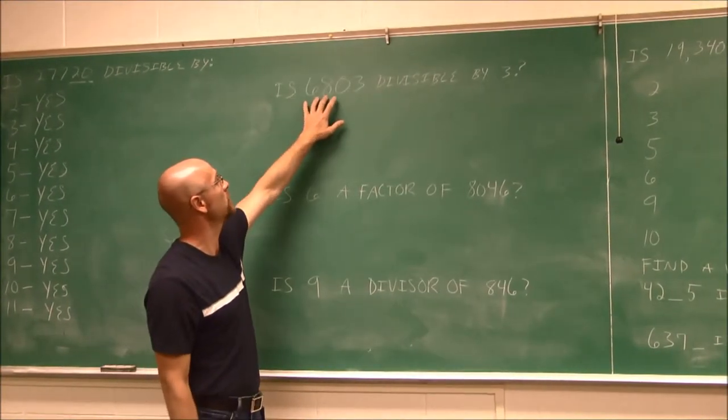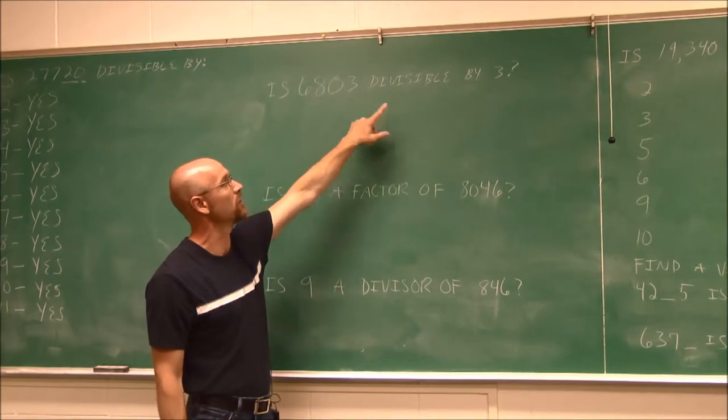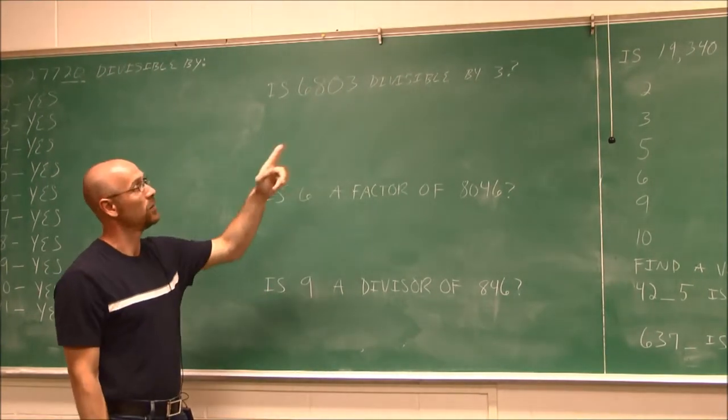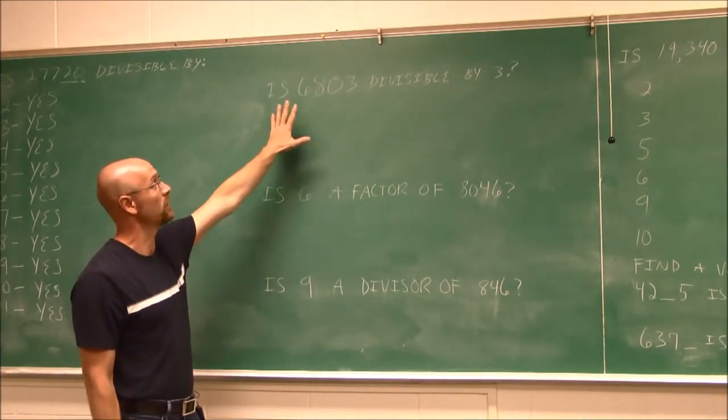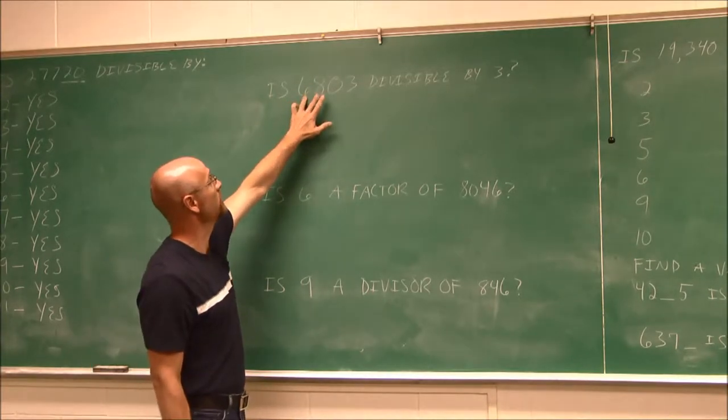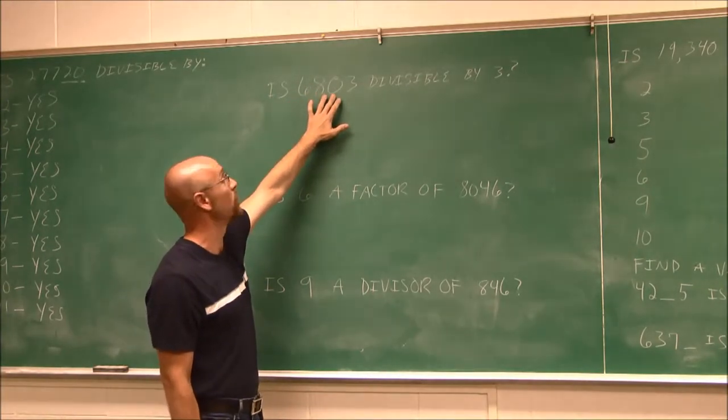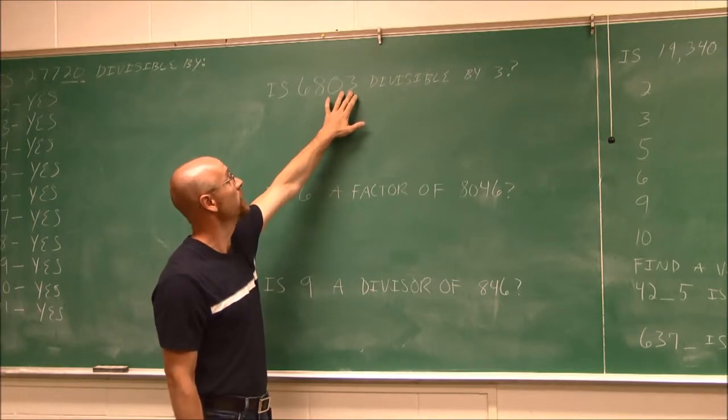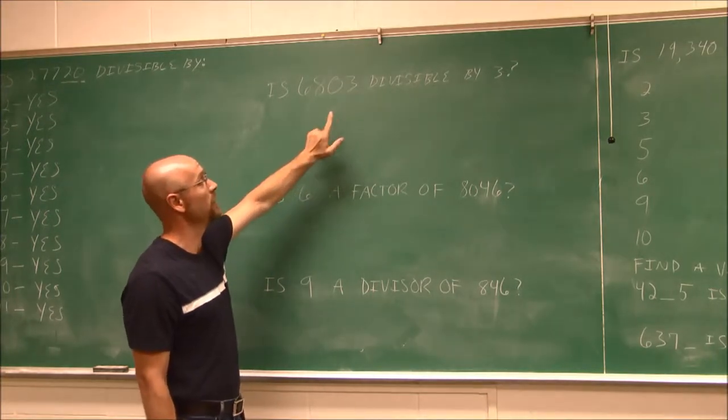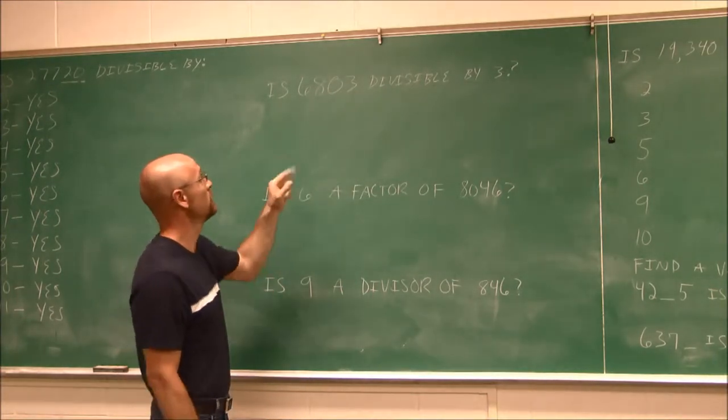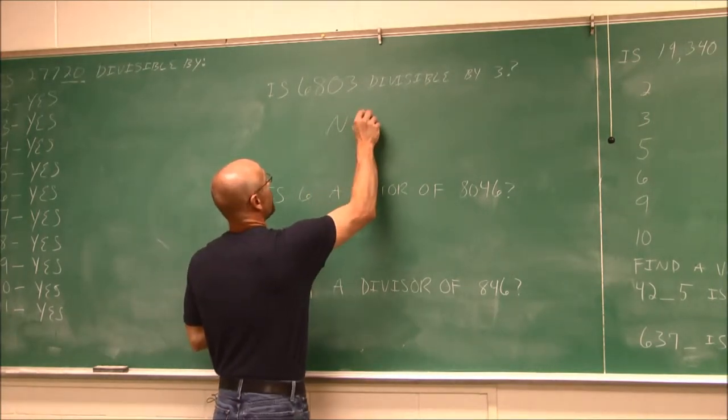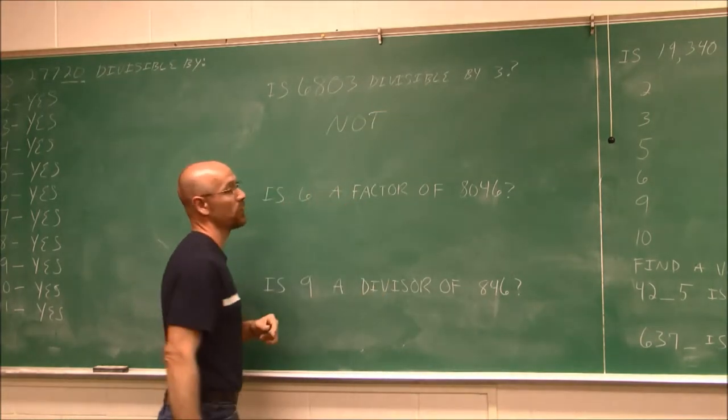It asks, is 6,803 divisible by 3? Well, the divisibility rule of 3 says add them all together. 6 and 8 is 14, plus 0 is still 14, plus 3 is 17. 17 is not divisible by 3, so this number is not divisible by 3.